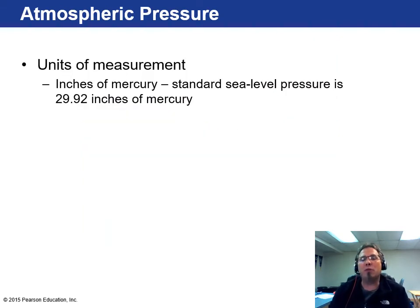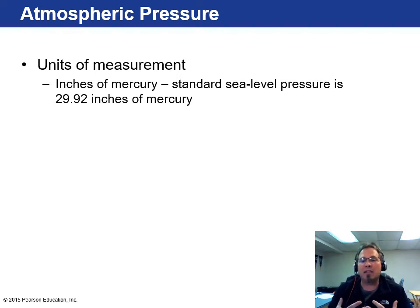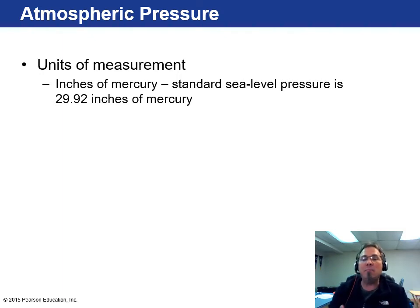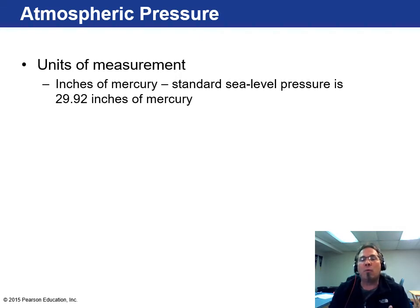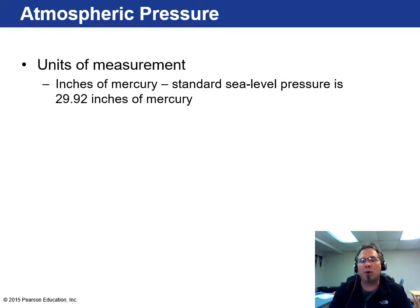The unit of measurement we commonly use is inches of mercury, devised back in the 1600s but still used today because people understand it — similar to how the general public understands the Richter scale even though seismologists use newer scales. We don't actually use mercury anymore because it's highly toxic, but when this scale was first devised in the 1600s, that's how it was done. Average sea level pressure is 29.92 inches of mercury.